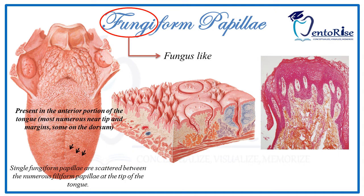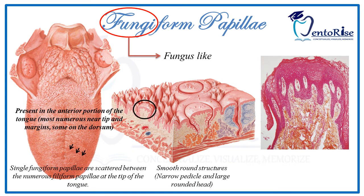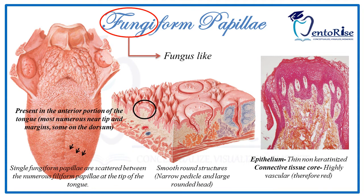If we talk about the shape, these are smooth round structures with a narrow pedicle and a large rounded head. Please observe the figure very carefully. The epithelium is thin and non-keratinized, but the connective tissue is very highly vascular. It contains numerous blood vessels, and therefore it gives a red appearance.